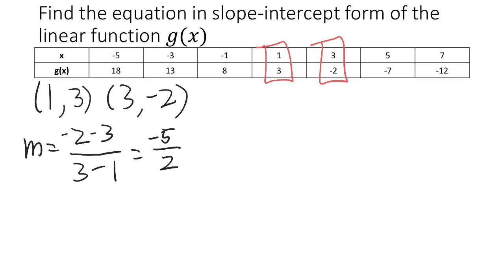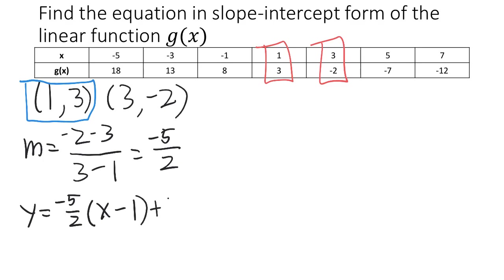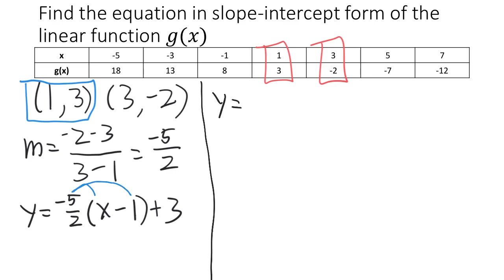From here we can go to the point-slope form. We take negative 5 over 2 as our slope, and I will pick 1 comma 3 as the point. Plugging into the point-slope form: y equals m times (x minus x1) plus y1. This is the point-slope form of the line, which we can now convert into slope-intercept by distributing negative 5 over 2 into the parentheses and then combining like terms. When we multiply, we end up with negative 5 over 2 times x equals negative 5 over 2 x.